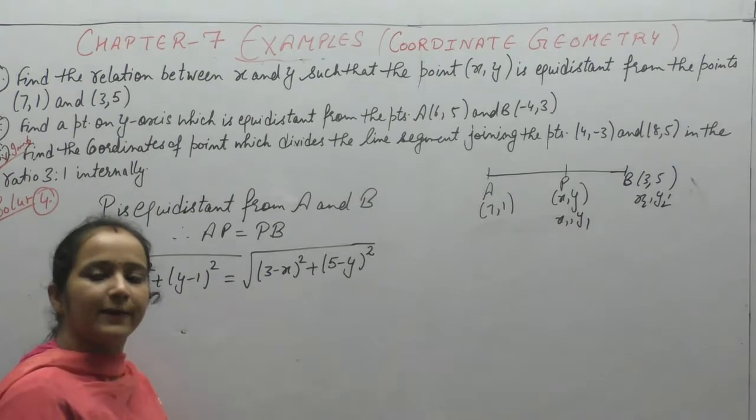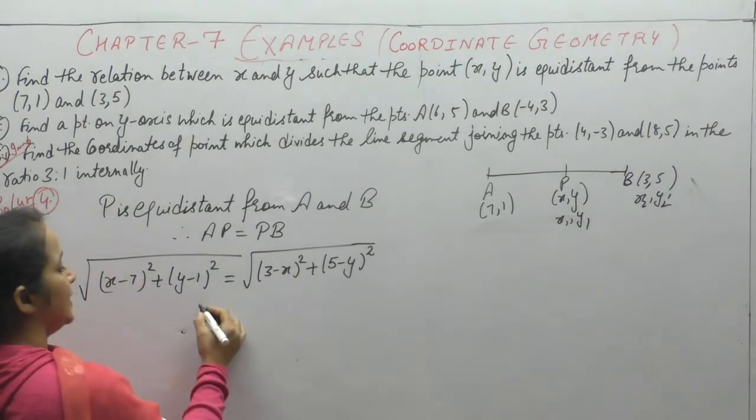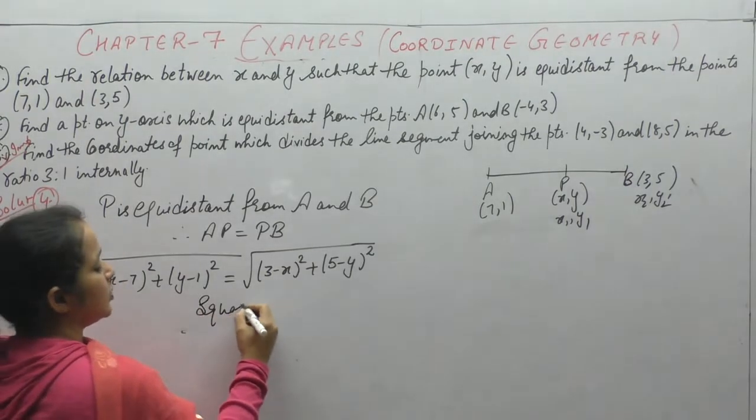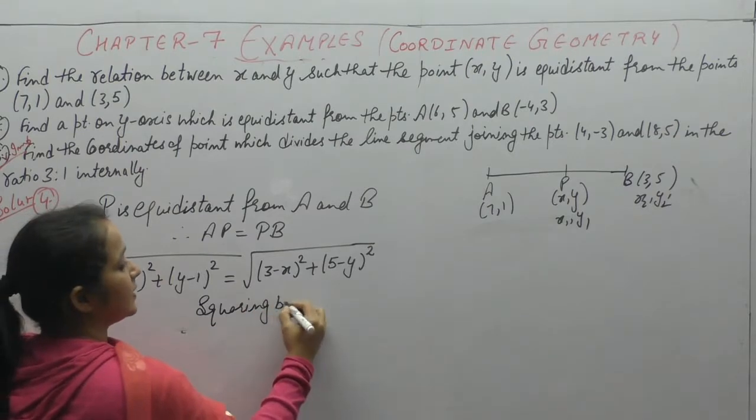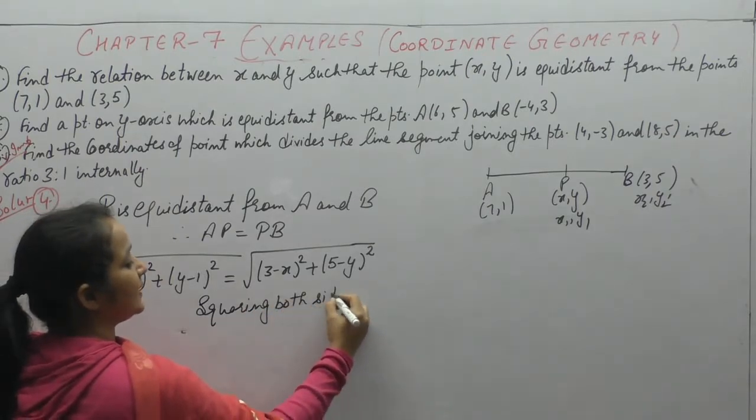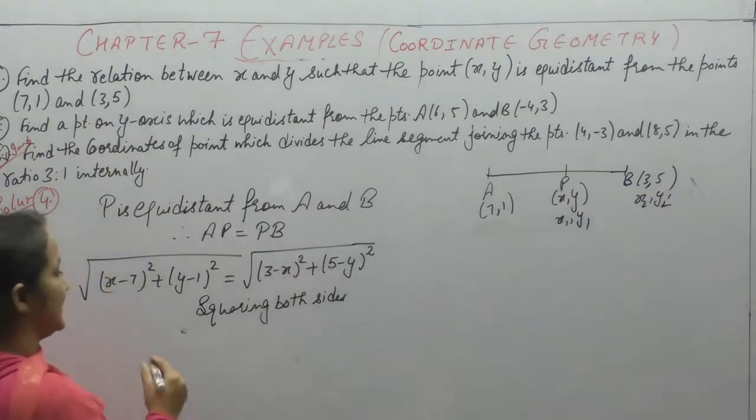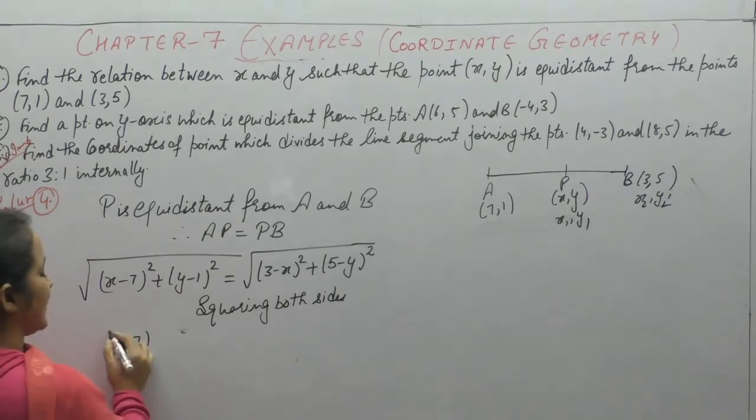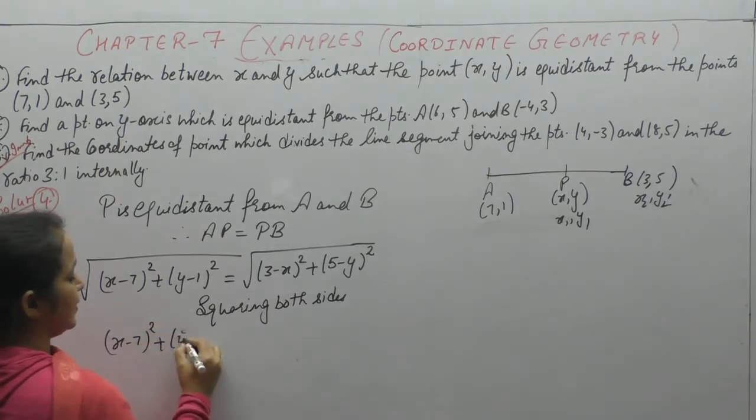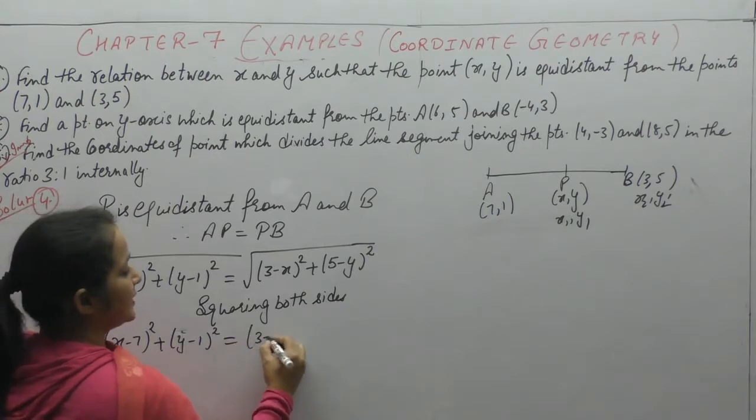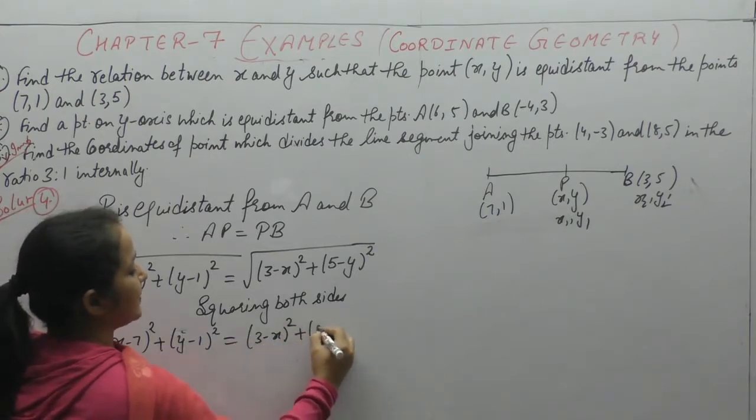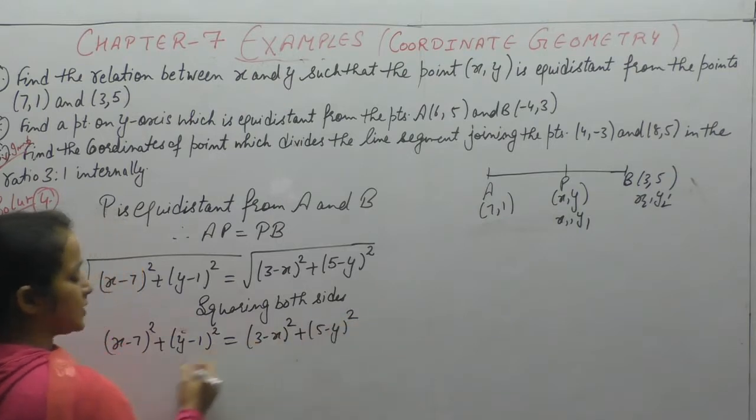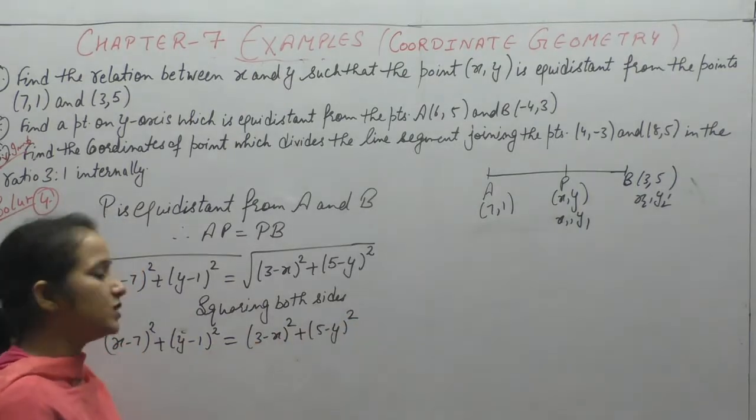Both sides have square root terms, so squaring both sides. After squaring, square root cancels. We get (x-7)² + (y-1)² = (x-3)² + (y-5)². All four terms are whole square.